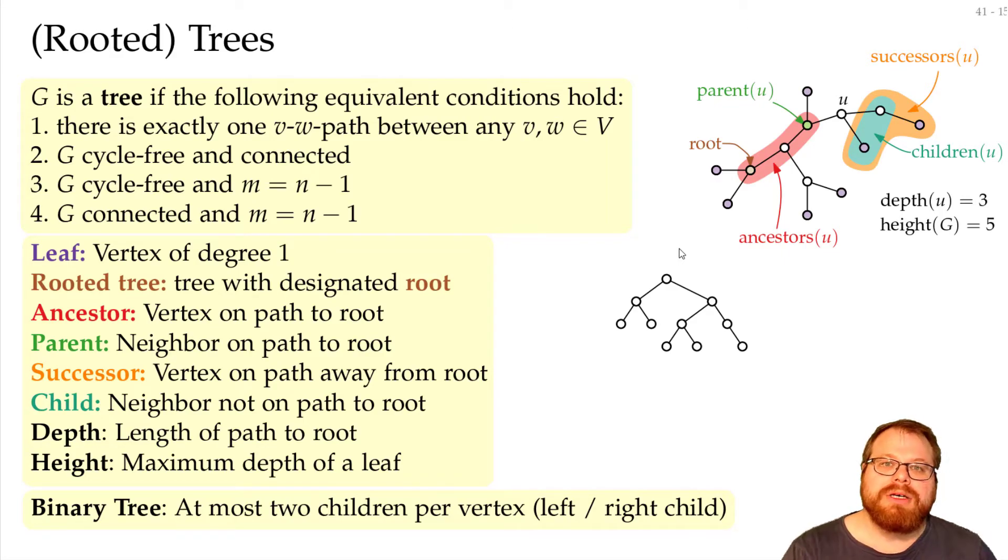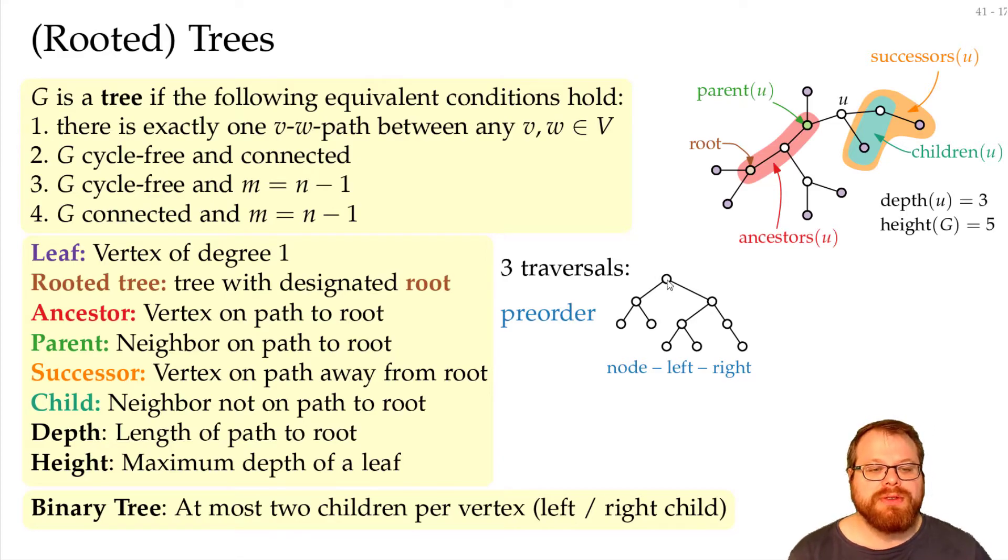You probably already learned that there are different traversal strategies for binary search trees. We have the pre-order. There we start with the root. And we always first go to the node, then to the left child, and then to the right child. So we start here, go to the left child, take this, go to the left child, take this, go back, go to the right child, take this, go back to the right side, and we traverse them in this pre-order.